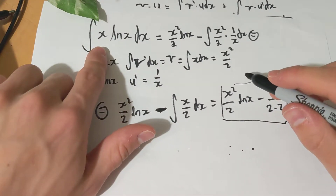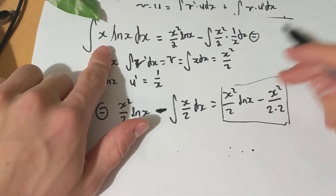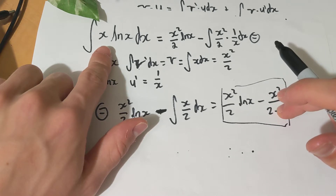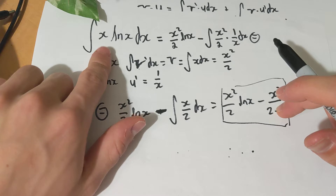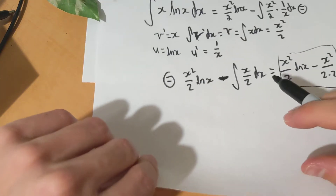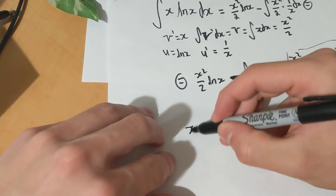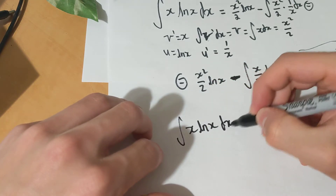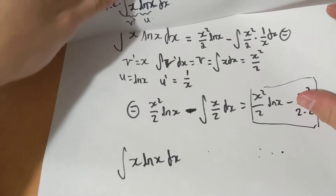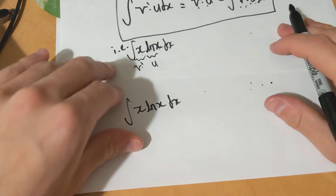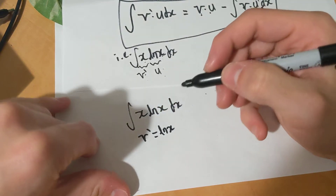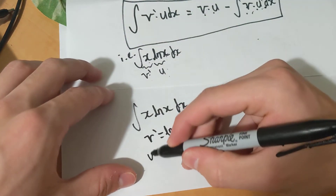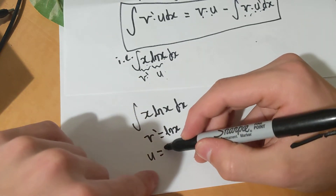Now try doing this with a u-substitution — I guarantee you cannot do it, it's not a powerful enough tool, so you have to use integration by parts. You'll pick up on the pattern. For instance, in this example, what if instead your v prime was not x? Let's say we called our v prime ln x — because realistically it doesn't matter which one you call it, since it's just a product of the two. You define which one is which. And then our u would just be x.